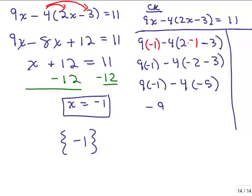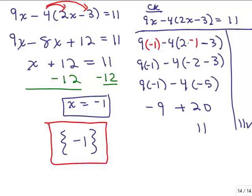Negative 9 plus 20 is 11. On the right-hand side, I have 11. So there you go — I got the right answer. Negative 1 is the solution set to this problem. I'm going to make another video with some more problems involving grouping symbols like parentheses and brackets.